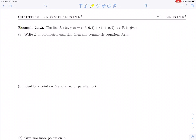In this video, we're going to do example 2.1.2. Here we're told the line L: (x, y, z) = (-3, 6, 1) + t(-1, 0, 2), with t in ℝ, is given.